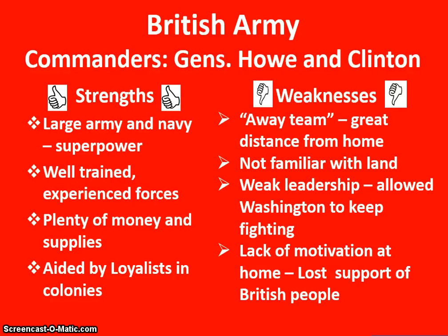Now let's look at the British Army under their commanders Generals Howe and Clinton. The British had some pretty obvious strengths: they had a very large army and Navy, and were at this time the world's greatest superpower. This army was well trained and experienced because it had fought all over the world. They had plenty of money and supplies backed by one of the world's richest countries. And they were also aided by loyalists in the colonies — American colonists who remained loyal to Britain and in many cases aided their soldiers on this side of the Atlantic.